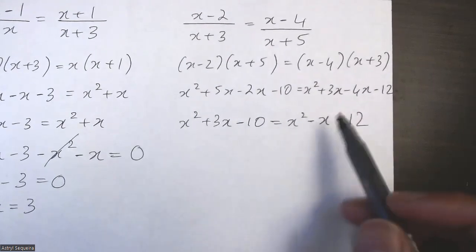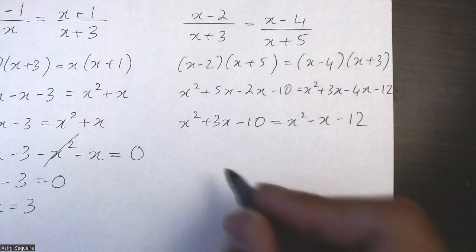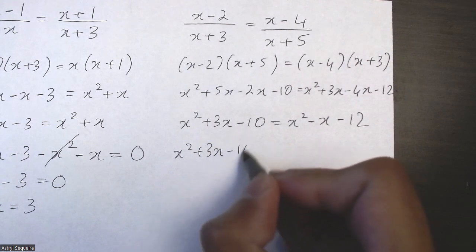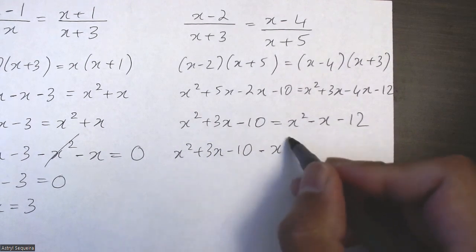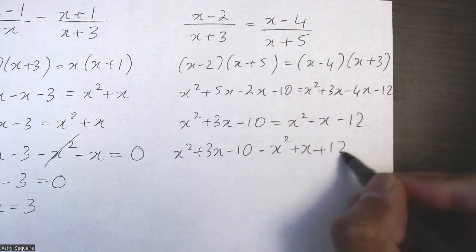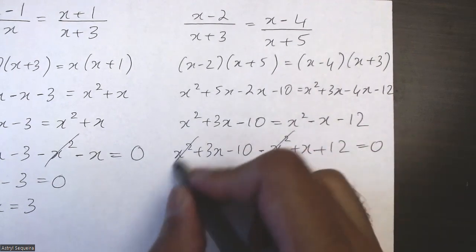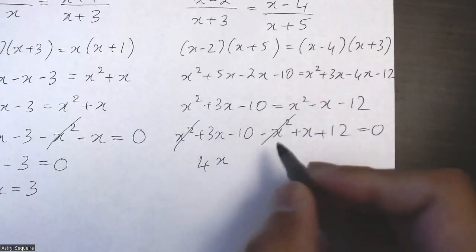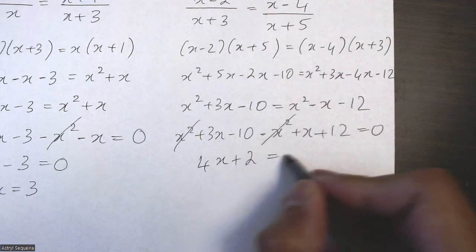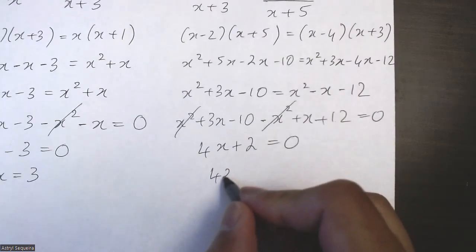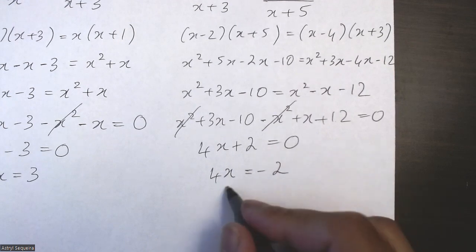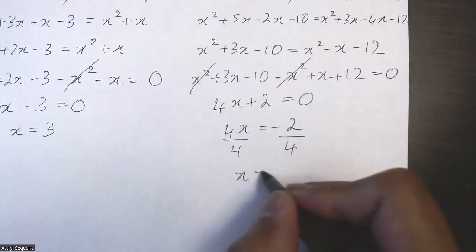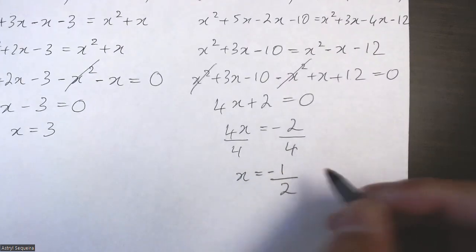Again this looks quadratic, but when I move the x squared to this side it will cancel out. Moving everything to one side: the x squared terms cancel, leaving 3x plus x equals 4x, and negative 10 plus 12 equals plus 2. Moving the 2 to the other side and dividing both sides by 4, my final answer is x = -1/2.